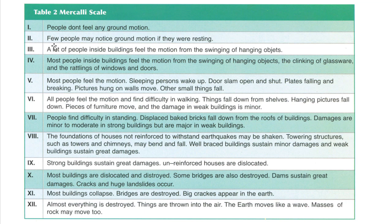Another measurement is the Mercalli scale, which has 12 levels. At the first level, people cannot feel any ground motion — similar to the Richter scale — but of course the seismograph can measure it. At the second level, some people may notice ground motion if they were resting.